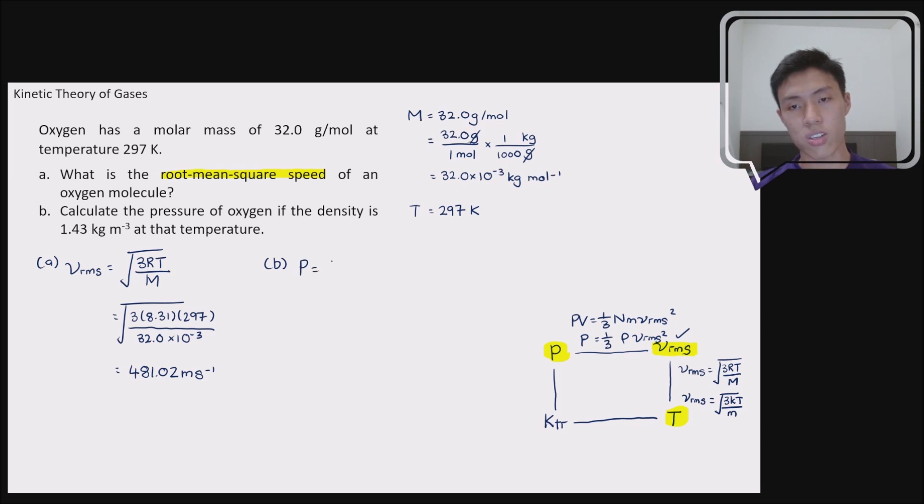Well, it's just substitution left actually. P is equals to 1 over 3 rho Vrms square. So the pressure is what we want to find. So the rho is the density, which is 1.43 kg per meter cube. Then you have your Vrms, your Vrms is obtained from question A to be 481.02, then you have square. So if you do your substitution, put it into your calculator, I believe you get pressure of 1.10 times 10 to the power of 5 Pa. So this will be the pressure of the oxygen gas in this system.